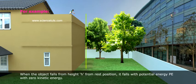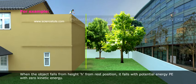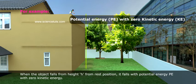When the object falls from height h from rest position, it falls with potential energy PE with zero kinetic energy.